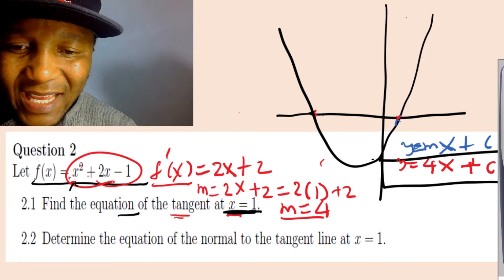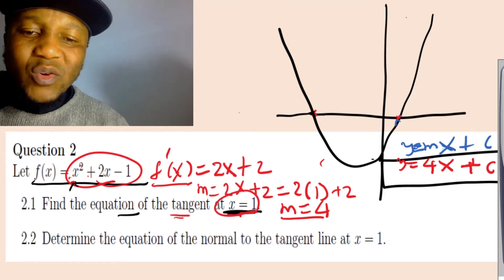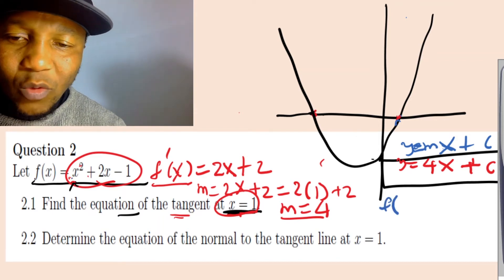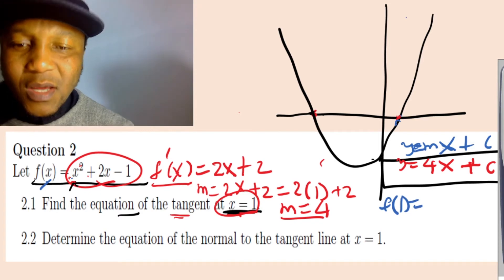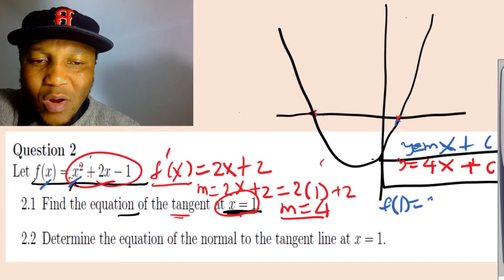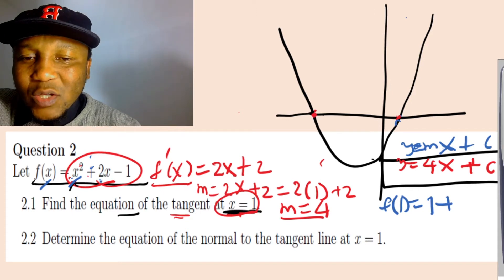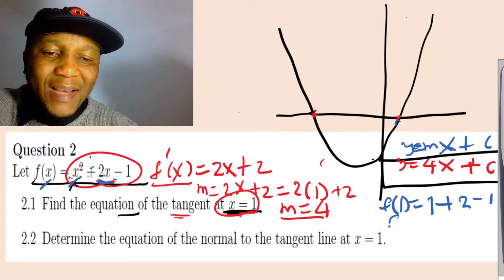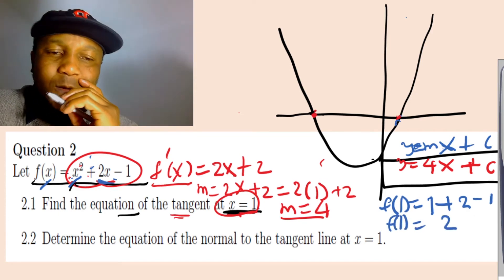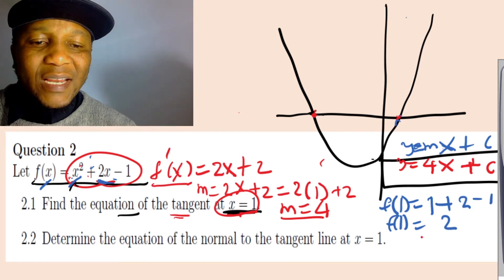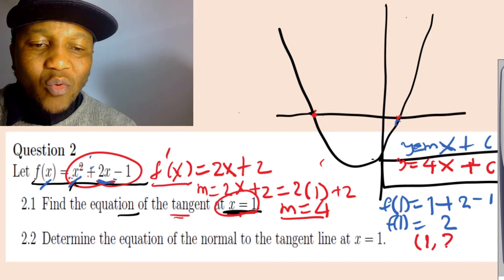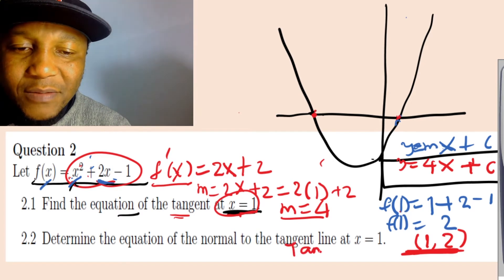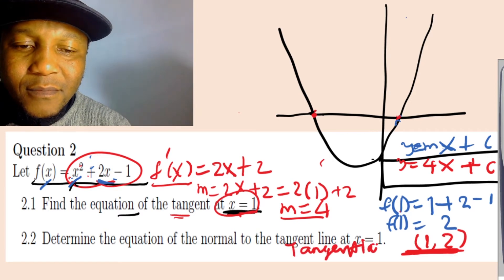Substituting x equal to 1 into the original equation: f(1) equals 1 squared plus 2 times 1 minus 1 equals 1 plus 2 minus 1 equals 2. So at the tangent point, when x equals 1, y equals 2. The tangent coordinate is (1, 2).